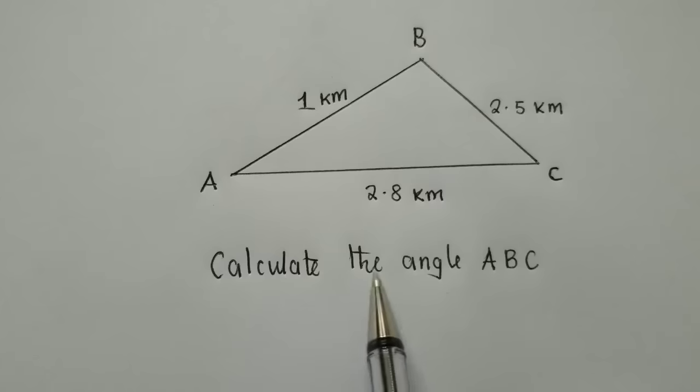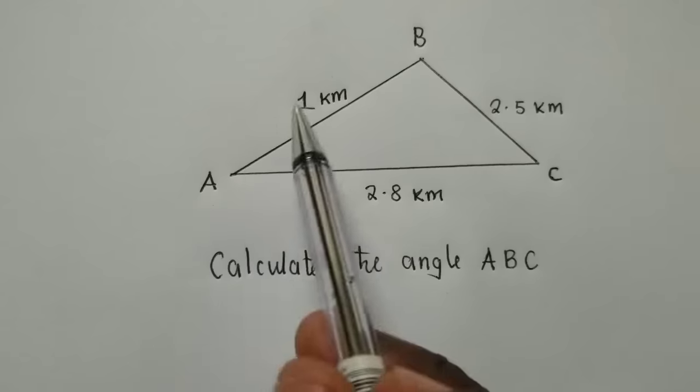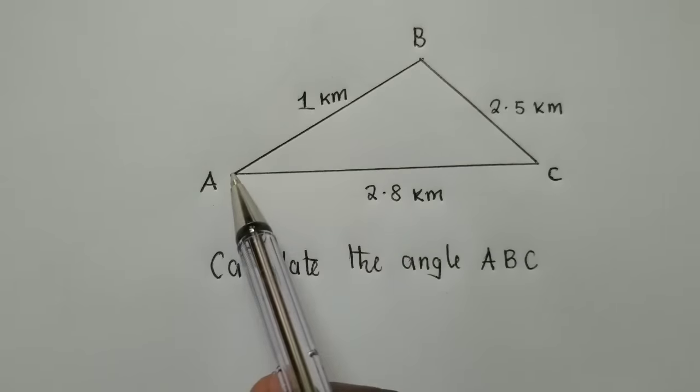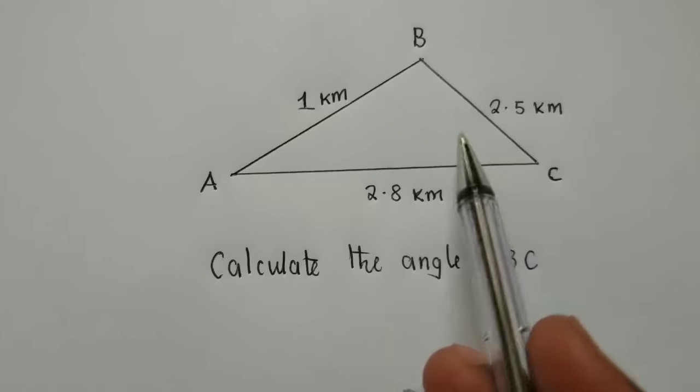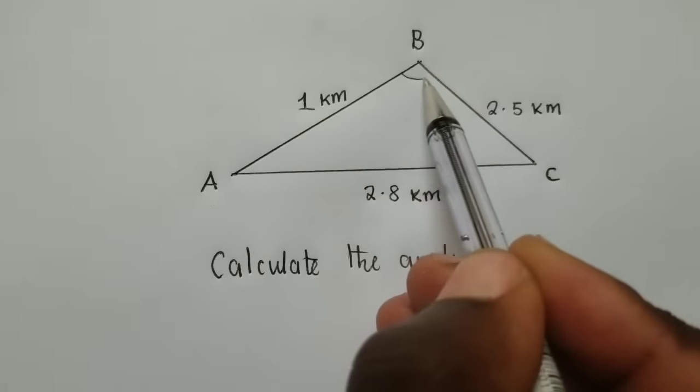So the question here reads, calculate the angle ABC. So we have been given all the sides, and they want us to calculate angle ABC. So meaning the angle we're looking for is right here. That's the angle that we're looking for.